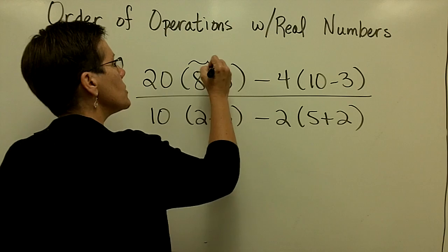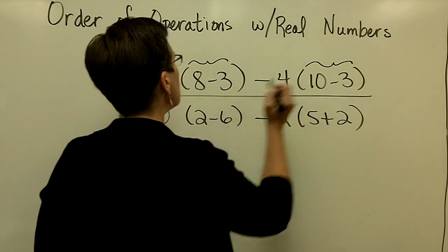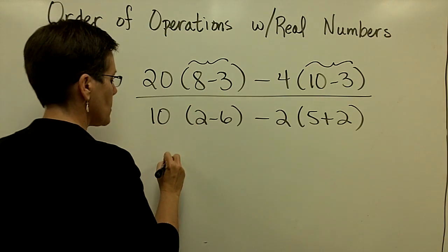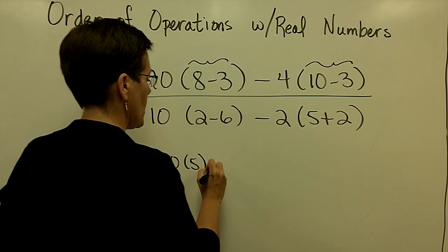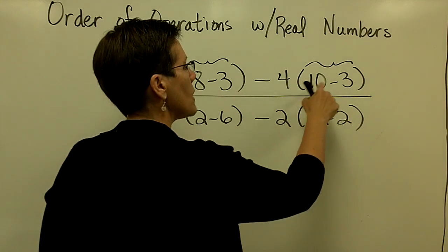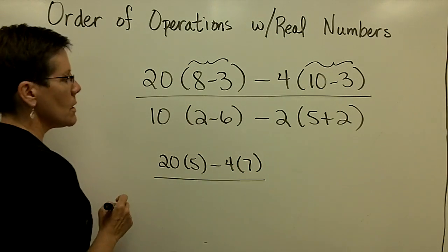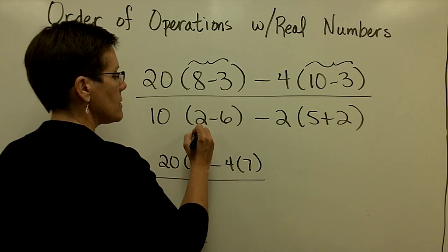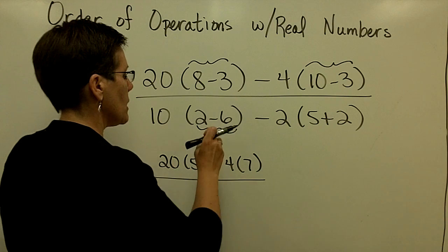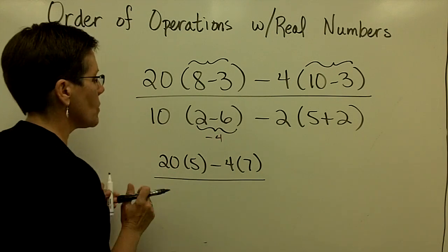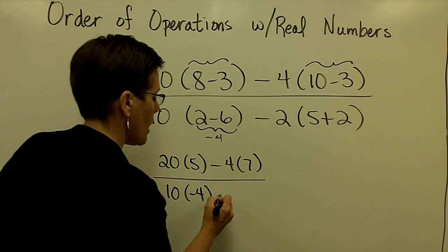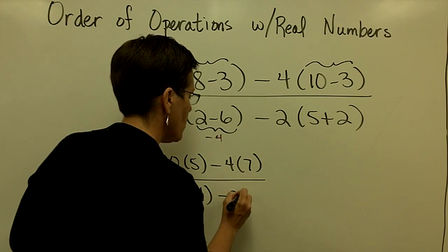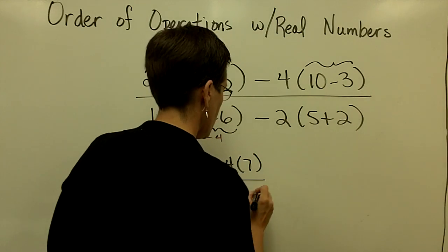So within that, I have to do what's in these parentheses here. So 8 minus 3 is 5. So in the denominator, I'll have 20 times 5 minus 4, and 10 minus 3 is 7, 4 times 7. 2 minus 6, right there, is a negative 4. So in the denominator, I'm going to have 10 times a negative 4. I'm going to bring that minus sign. Minus 2 times 5 plus 2 is 7.